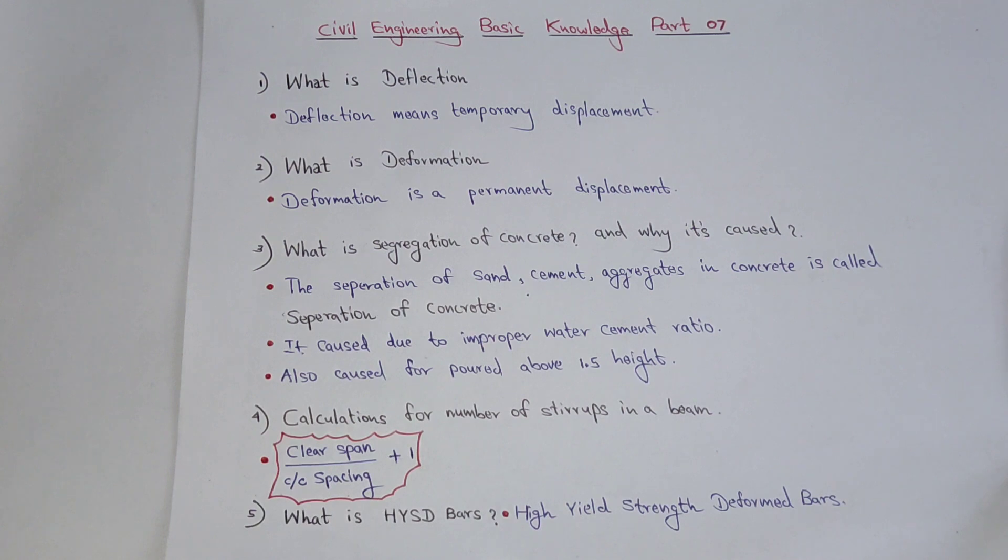The water to cement ratio needs to be maintained properly. When this is not maintained correctly, segregation occurs.